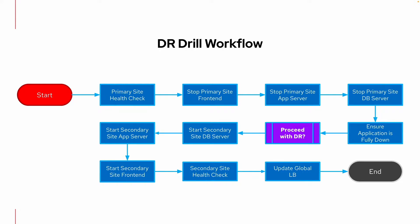Here is a high-level overview of the workflow. We start by creating the workflow in Ansible, then perform health checks, stop the front-end, the app server, and the database server, checking that the application is fully down on the primary site before deciding to proceed with the disaster recovery drill. Once decided, we start the database server in the secondary site, start the application server and front-end, perform a health check, then update the global load balancer to swing traffic to the secondary site. If everything is good, we declare the disaster recovery drill successful.